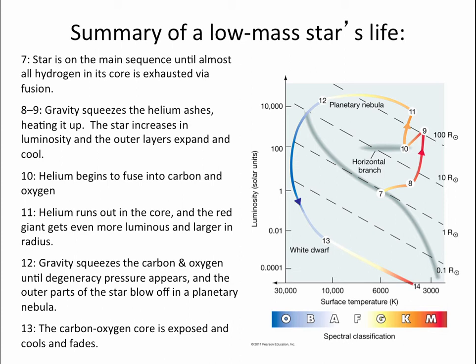Gravity will then squeeze that helium that's been formed. And in doing so, it makes the core of the star denser, the outer part of the star fluffs out, and we get a red giant. The star gets brighter and cooler, up through number 9 on this Hertzsprung-Russell diagram.